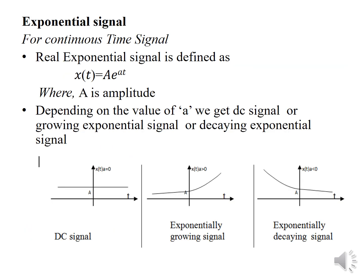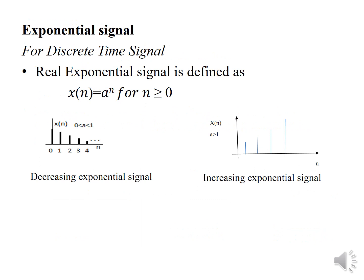Exponential signal: for continuous time, the real exponential signal is defined as x(t) = A·e^(at), where A is the amplitude. Depending upon the value of a, we get the DC signal, growing exponential signal, or decaying exponential signal. For discrete time, the real exponential signal is defined as x(n) = A·r^n for n ≥ 0. This gives the decreasing or increasing exponential signal depending on the value of r.